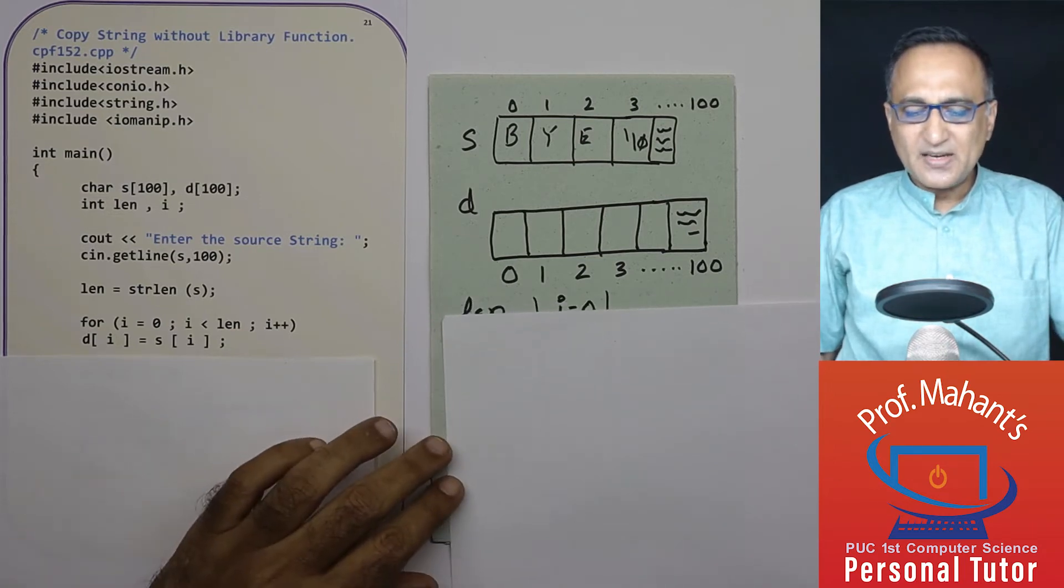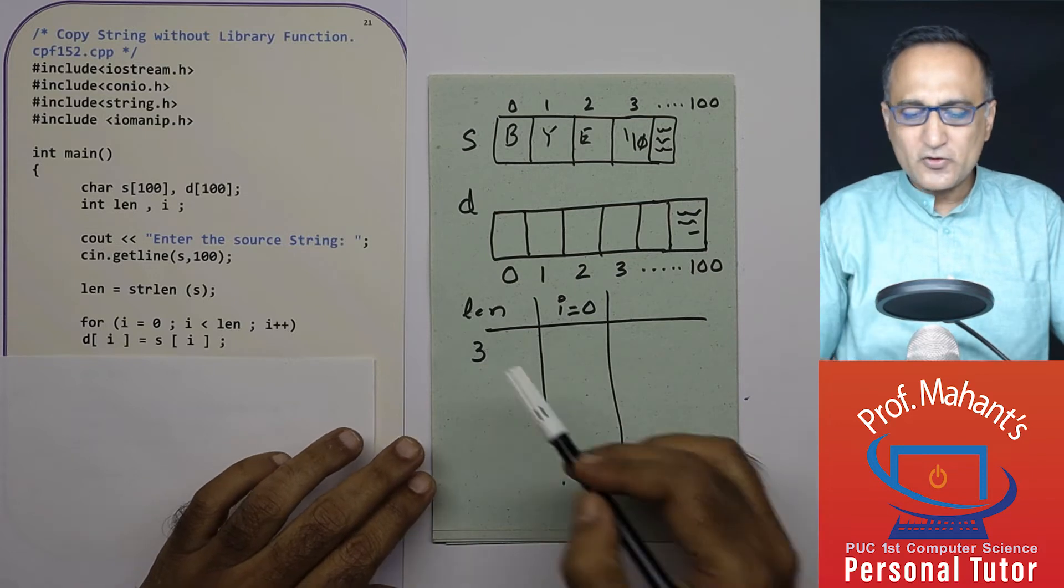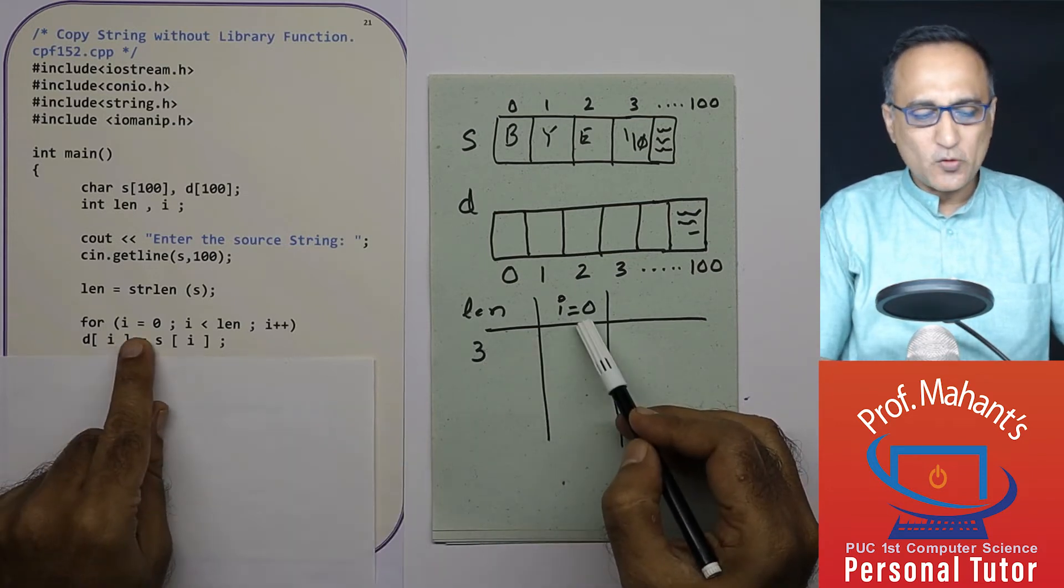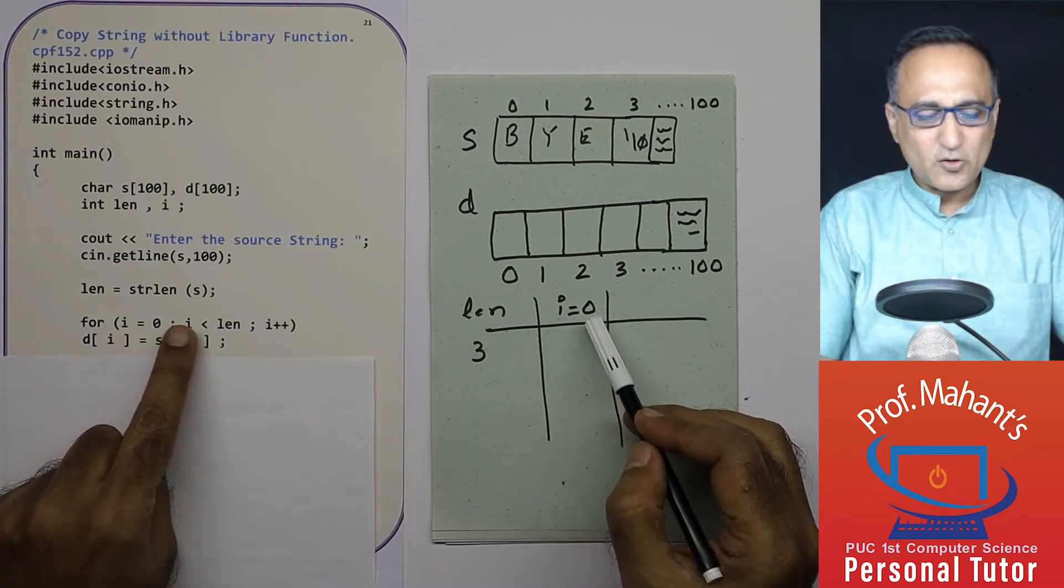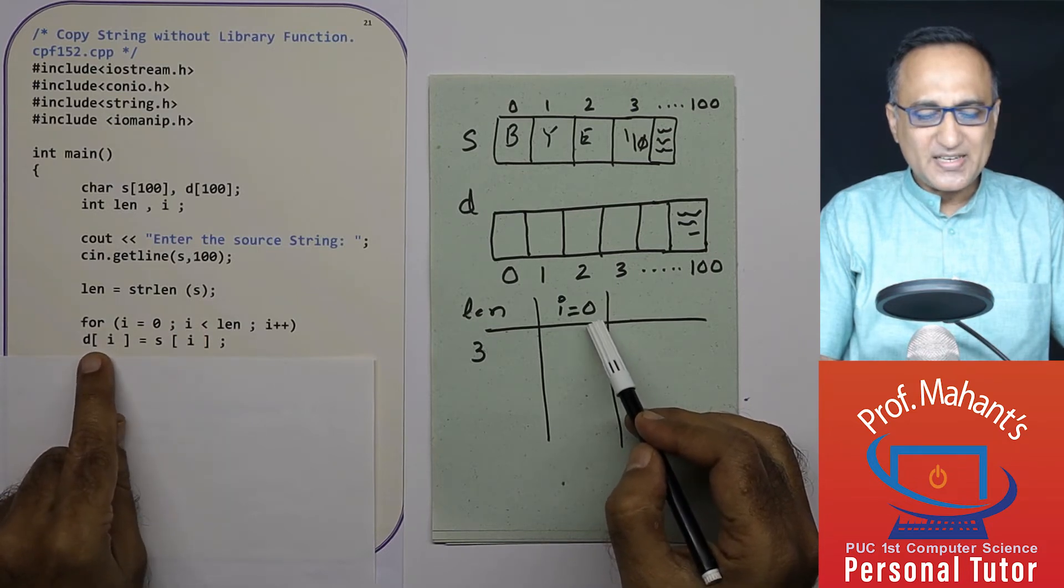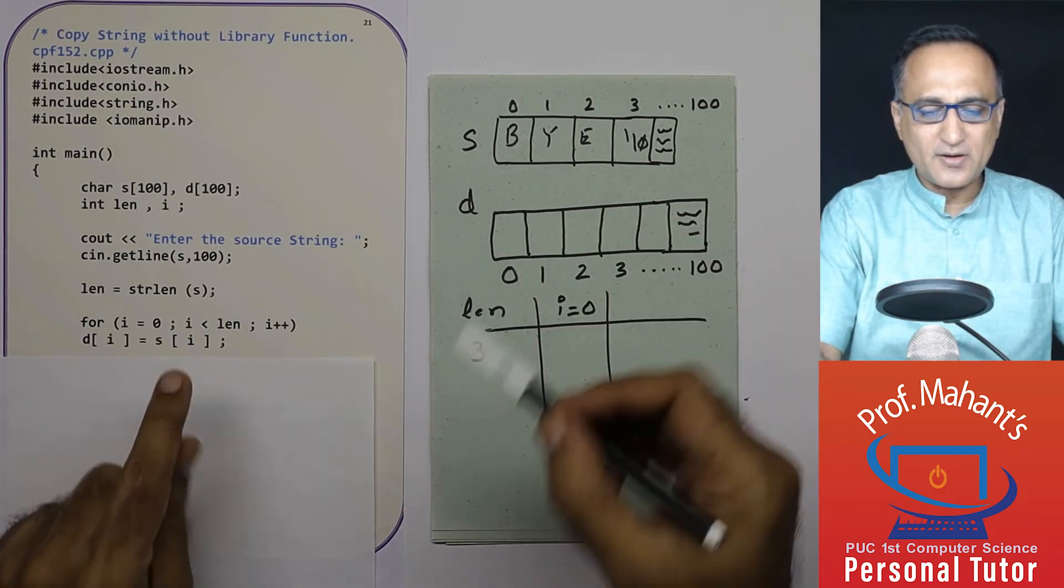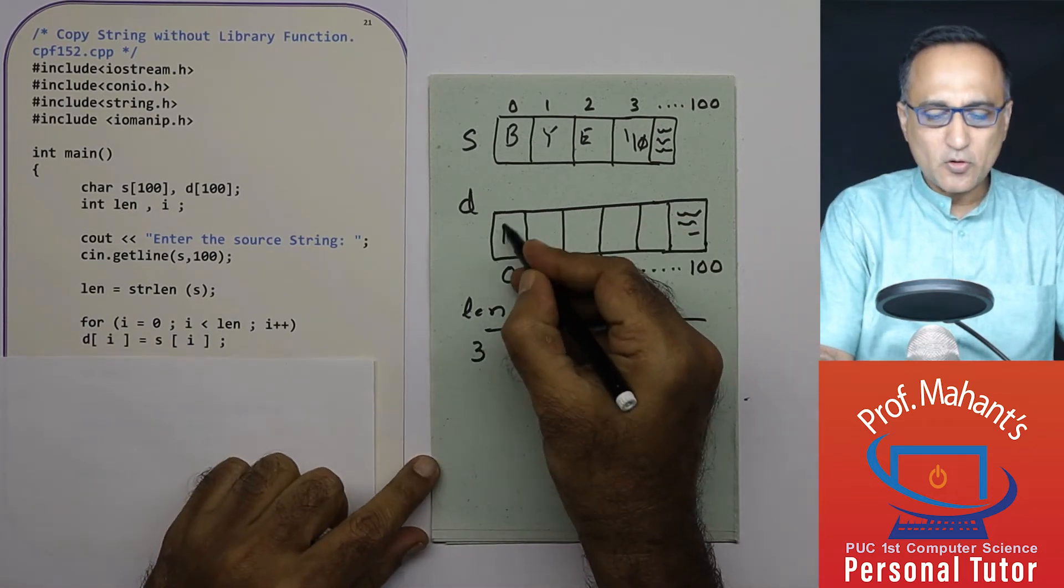Initially let us show the values of length and i. Length is three, i is zero. As per this, is zero less than three? It is true. So I am going to come here. What is d of zero? D of zero refers to this. What is s of zero? It refers to B. So I am going to copy here.